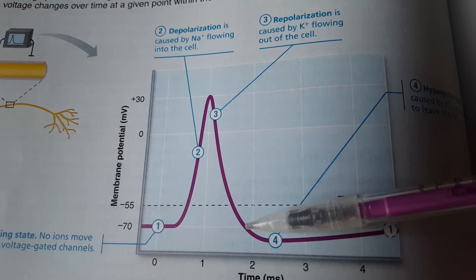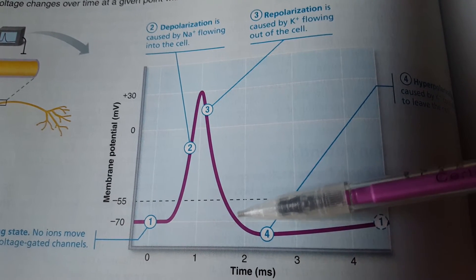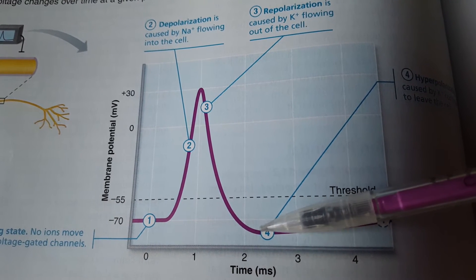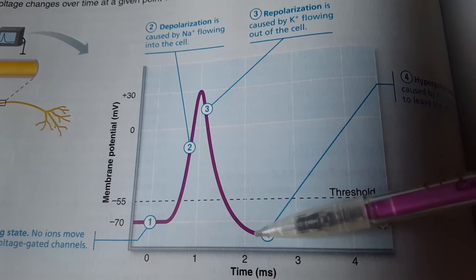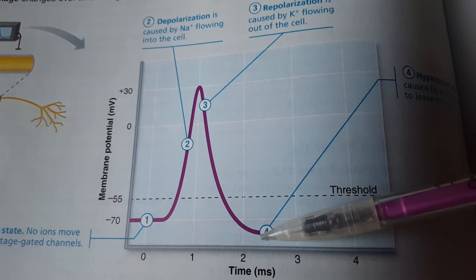Now not only do we get back to our original starting point, but remember that potassium voltage-gated channels close more slowly. And because potassium voltage-gated channels close more slowly, we actually get a little bit too negative. We become hyperpolarized.